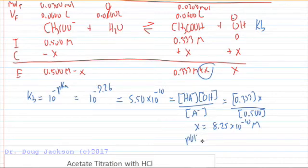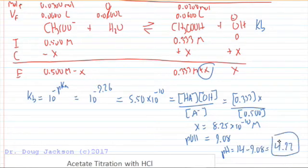That gives a pOH, when we take the negative log of that, of 9.08. If we wanted the pH, that is 14 minus 9.08, which is 4.92. That's one of the things we were asked to find, the pH of the solution, without using the Henderson-Hasselbalch equation.